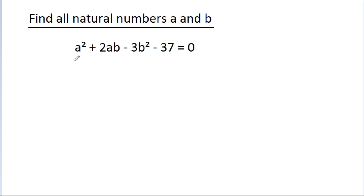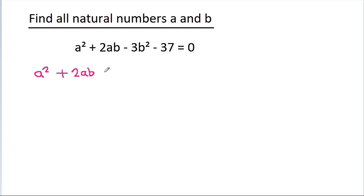In this video, we have given that a squared minus 2ab minus 3b squared minus 37 is equal to 0. Then we have to find all natural numbers a and b. So, we have a squared minus 2ab minus 3b squared minus 37 is equal to 0.